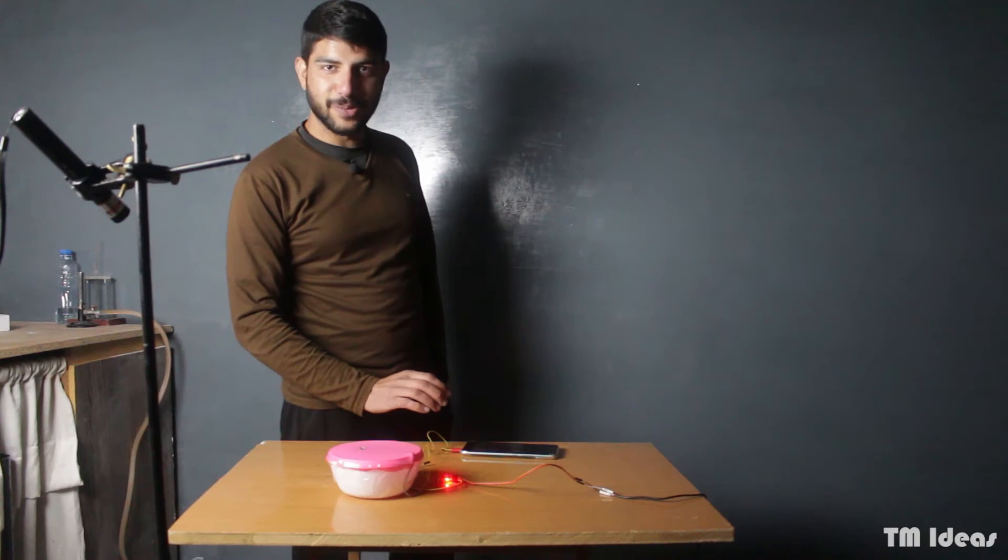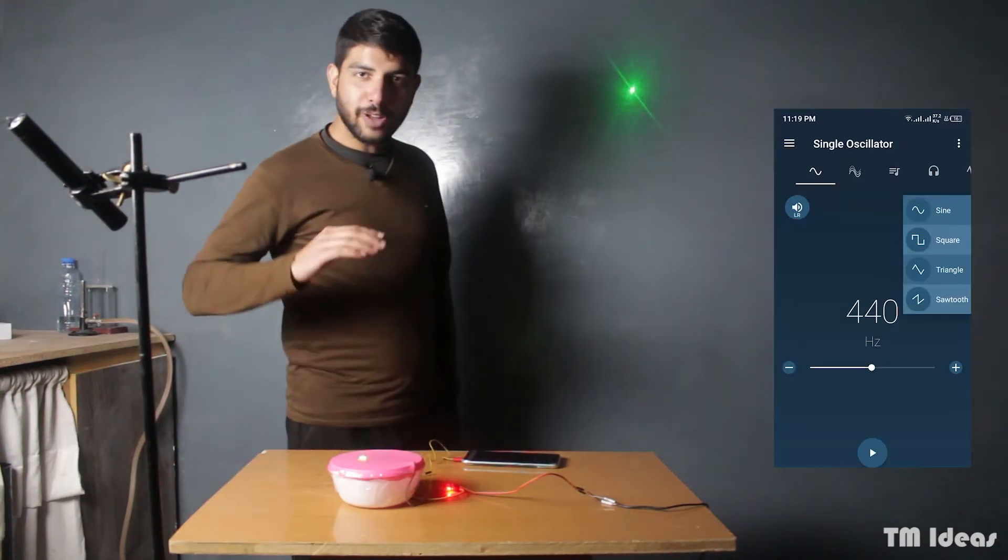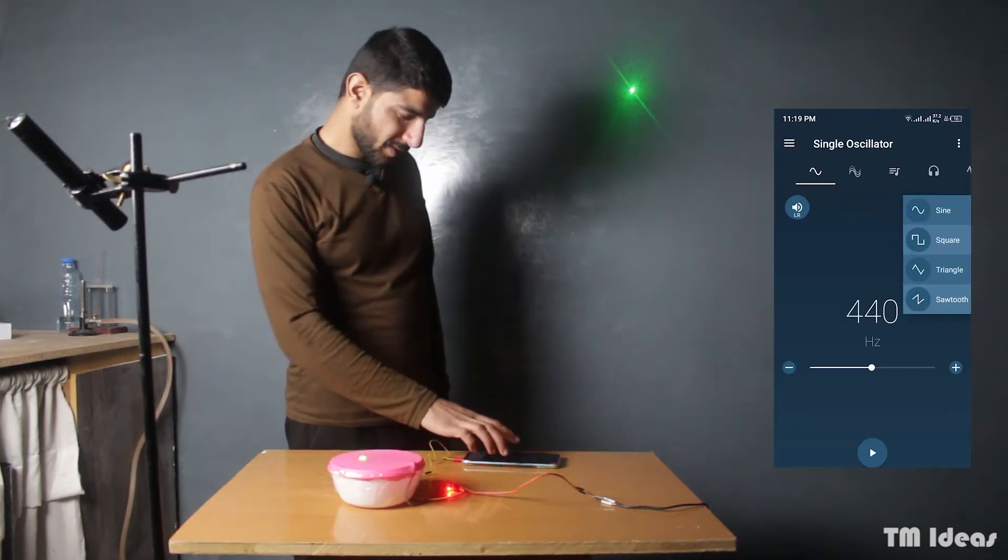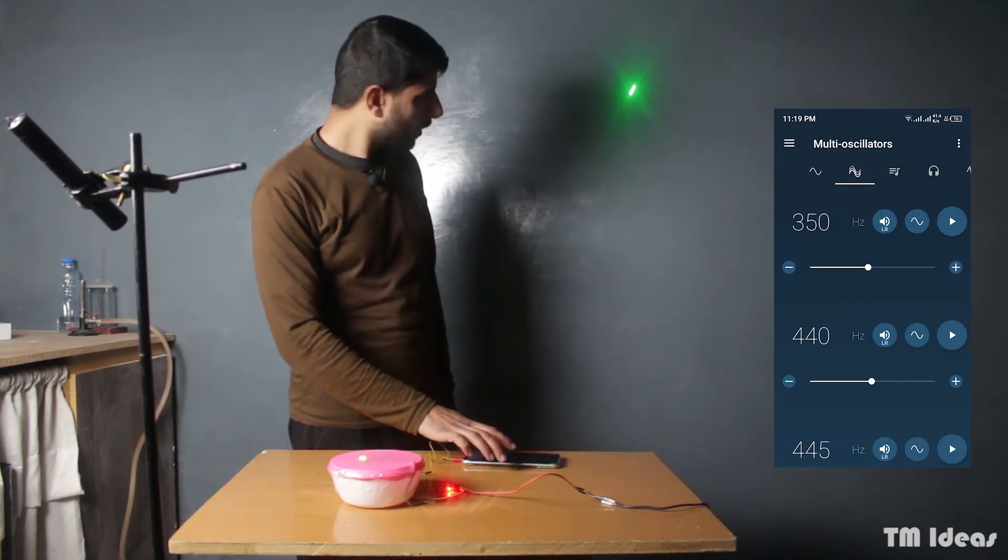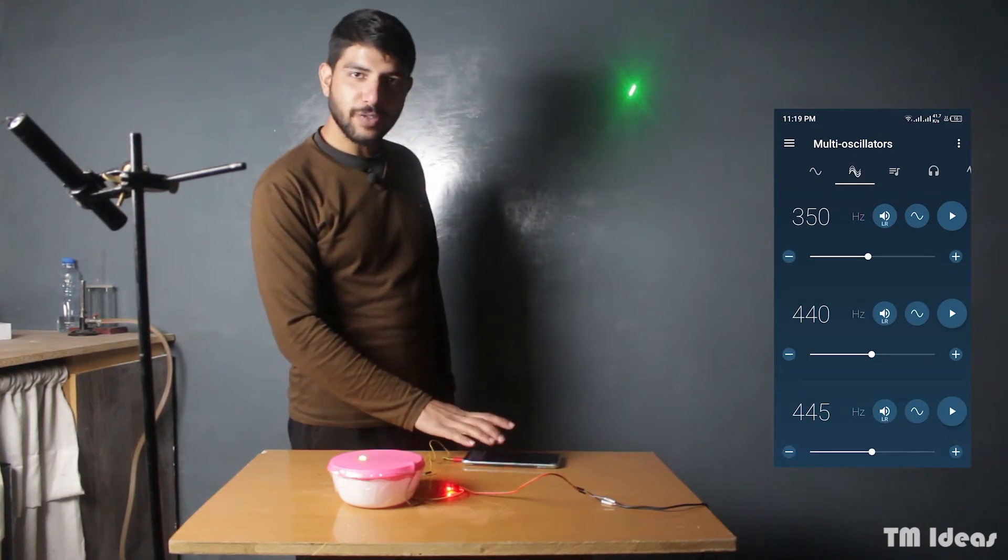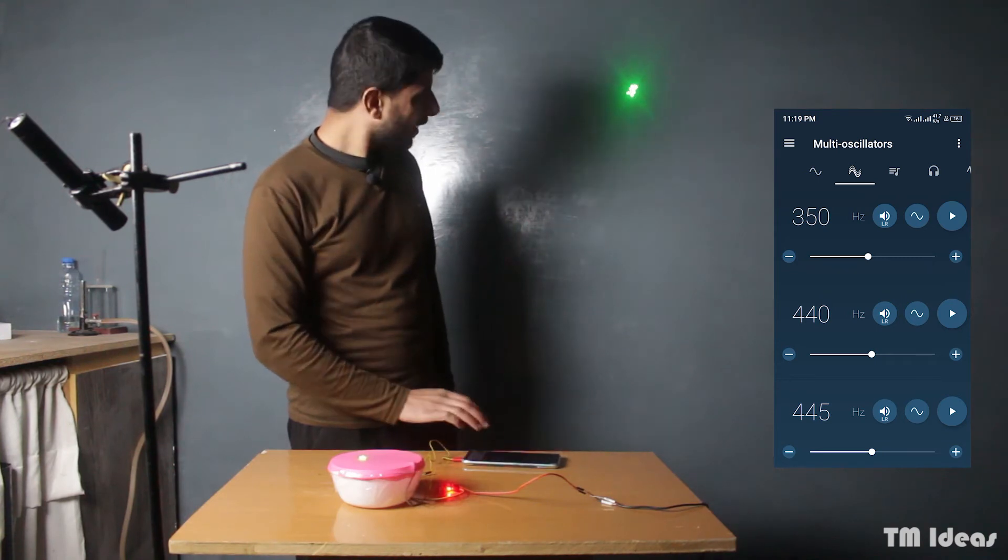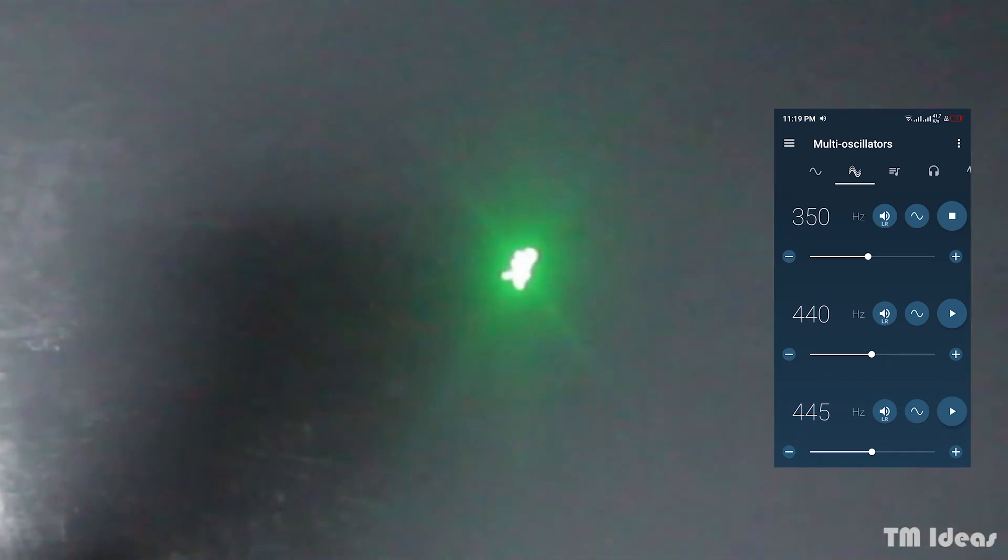Let me try something. I will overlap two frequencies, 350 hertz and 440 hertz. This is how 350 hertz looks like. This is how 440 hertz will look like. This is dancing. Those dancing patterns.